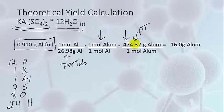So this is our theoretical yield of alum. If we start out with 0.91 grams of aluminum foil, we theoretically should be able to make 16.0 grams of alum. Of course, we always have losses. So it won't turn out to be 16 even if we start out with 0.91.